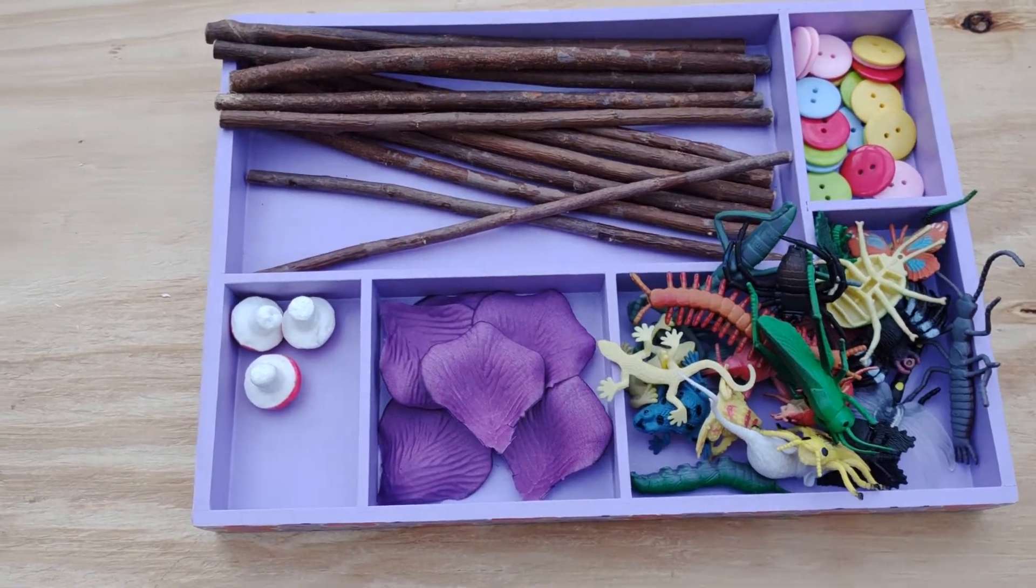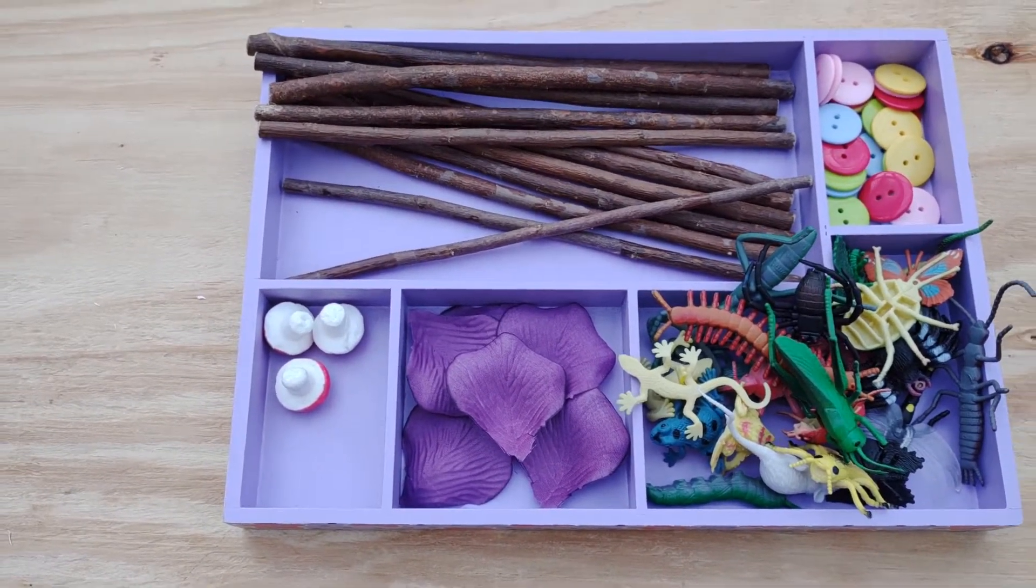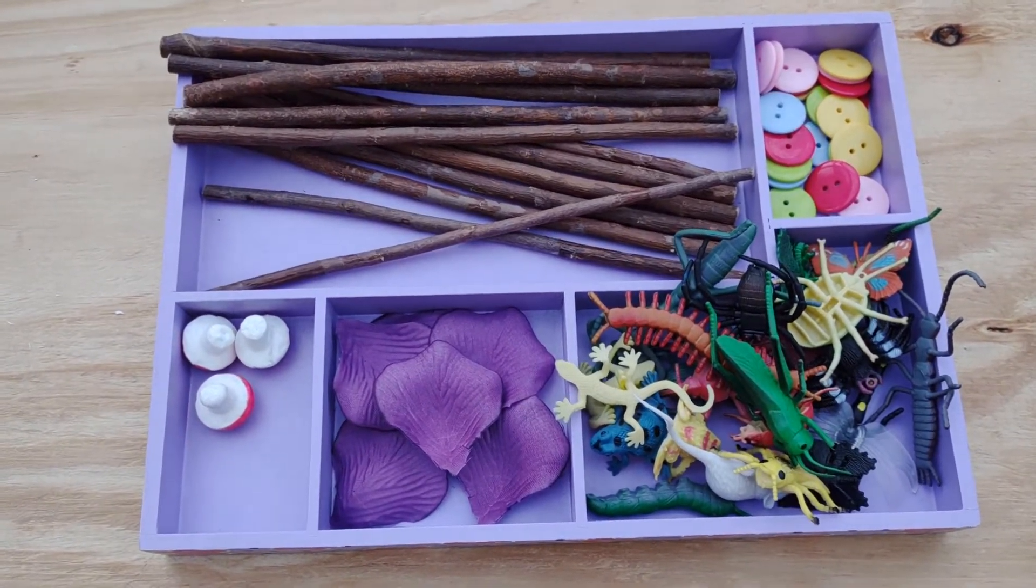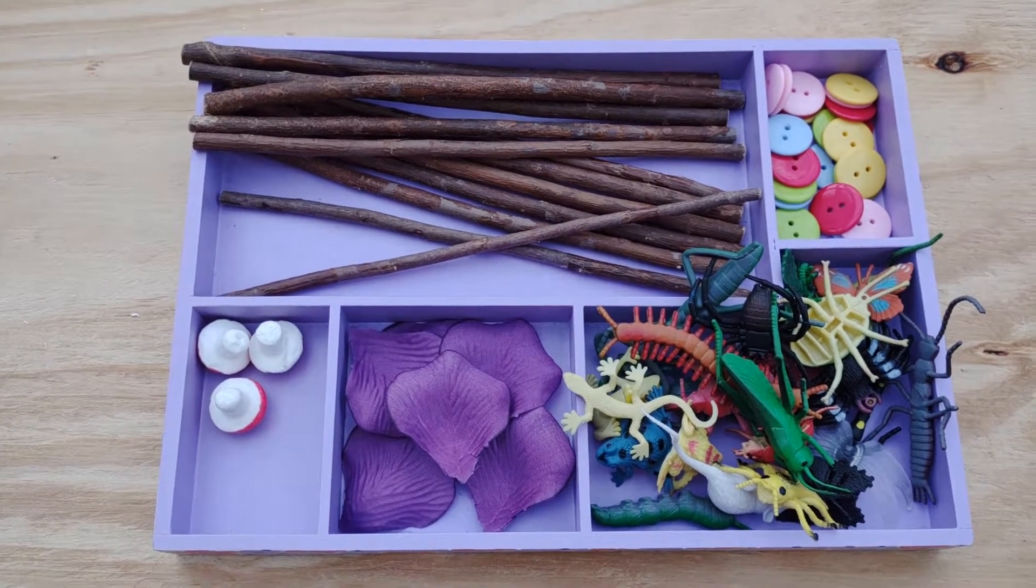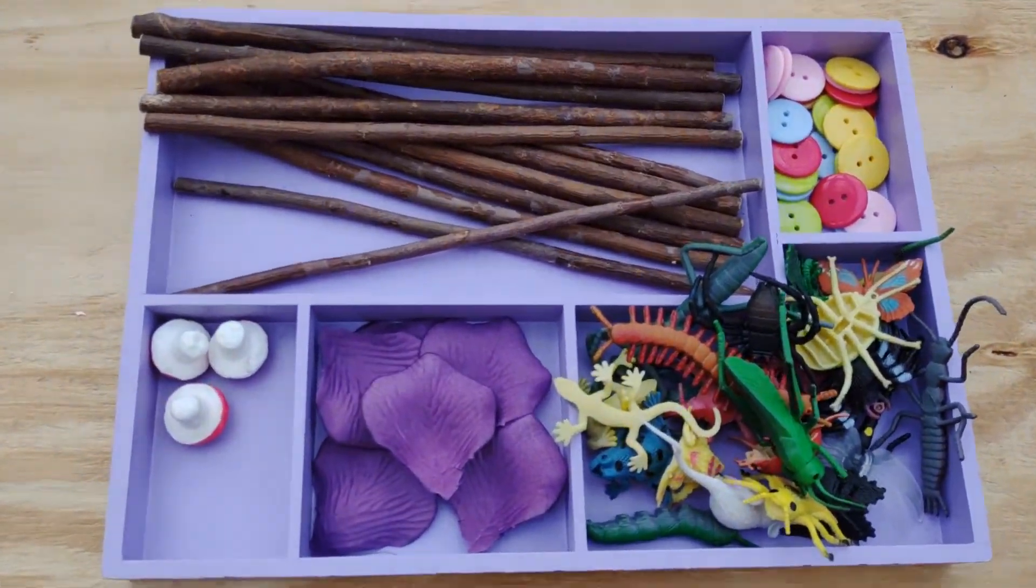In autumn it'd be lovely with conkers and acorns and all the pretty colors of the leaves. So you could do it with anything and as thriftily as you like. These are bits that we've had from around the house.